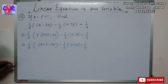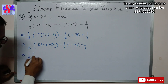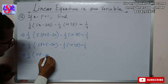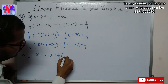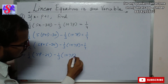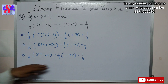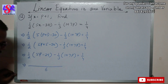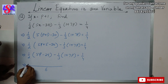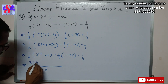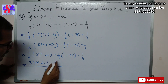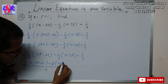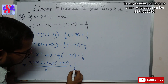Simplifying: (1/2)(5p - 25) - (1/3)(1 + 7p) = 1/4. Taking LCM of 2 and 3, we get 6. So [3(5p - 25) - 2(1 + 7p)] / 6 = 1/4.